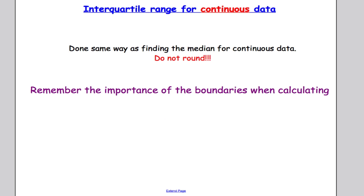Interquartile range for continuous data is far more commonly asked in the A-Level, so do be aware of this. It's done the same way as finding the median for continuous data. Importantly, do not round when you do n divided by 4 or 3n divided by 4. The importance of the boundaries is absolutely crucial when doing your calculations.